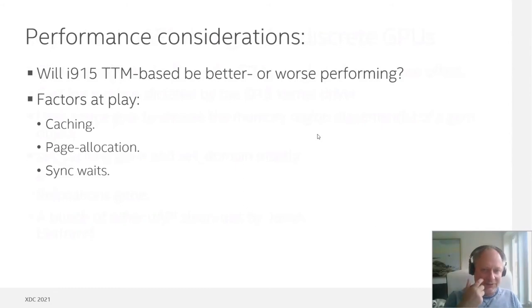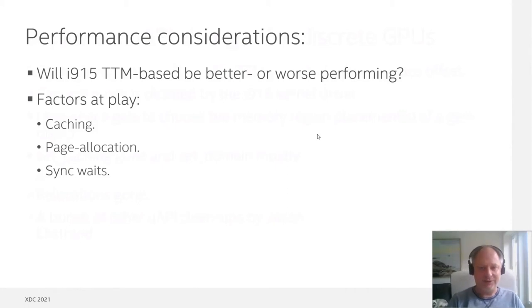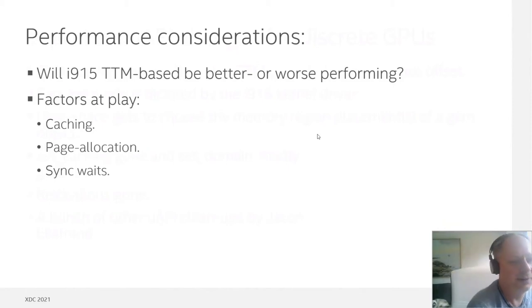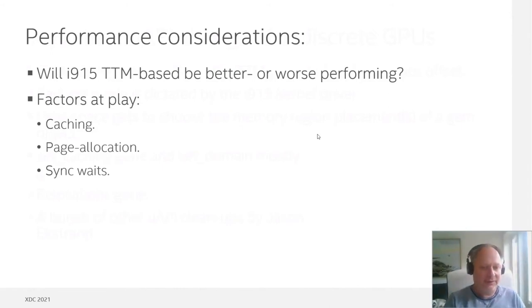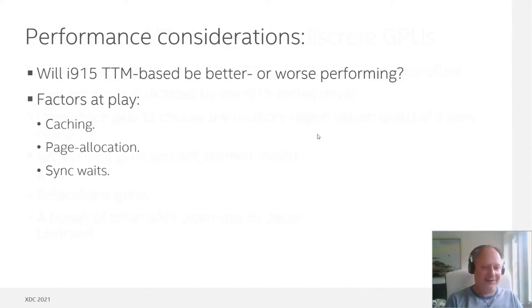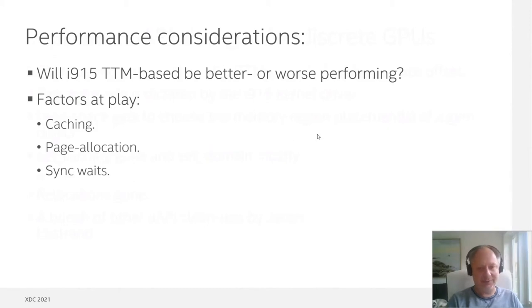I often get the question: is GEM or TTM the fastest choice? I would say it's not really a matter of TTM or GEM in any way — there are other much more important factors at play. For example, caching: reading from an uncached buffer isn't the fastest way of doing things. If some user space ends up doing that because of a changed caching mode for TTM, that's something we need to fix — and that will, of course, make TTM look slower.